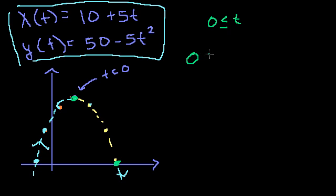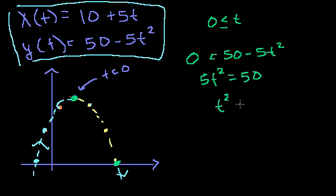So if we say what t value makes y equal 0, we just say 0 equals 50 minus 5t squared. So let's do that. 0 is equal to 50 minus 5t squared. Add 5t squared to both sides. You get 5t squared is equal to 50. Divide both sides by 5. t squared is equal to 10.